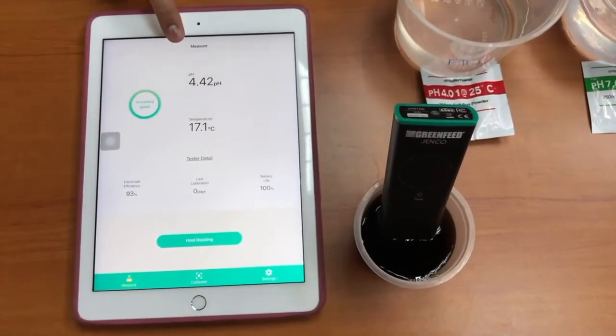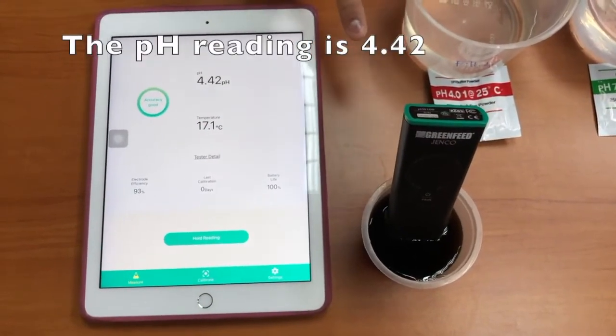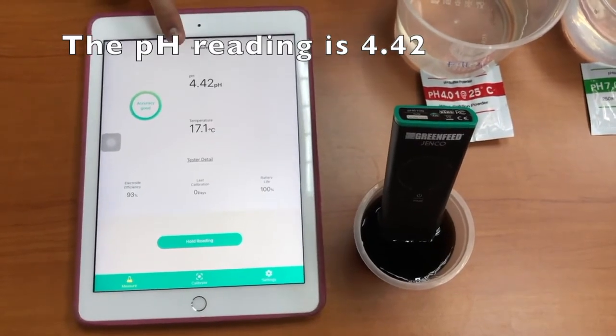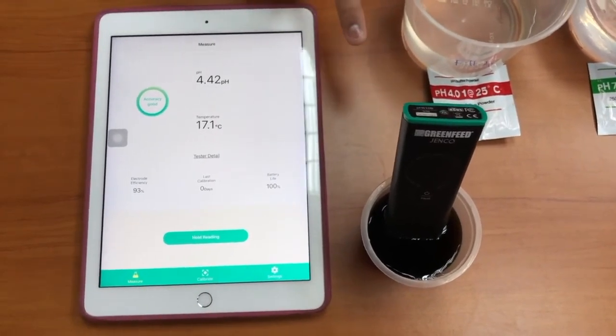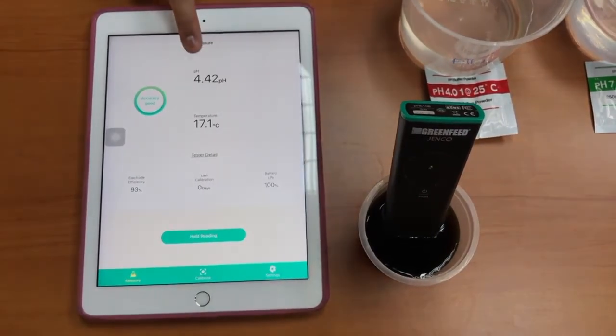After the reading is stable, we can see that the pH of the solution is 4.42. You can see that this solution is quite acidic. That's all from us, thank you.